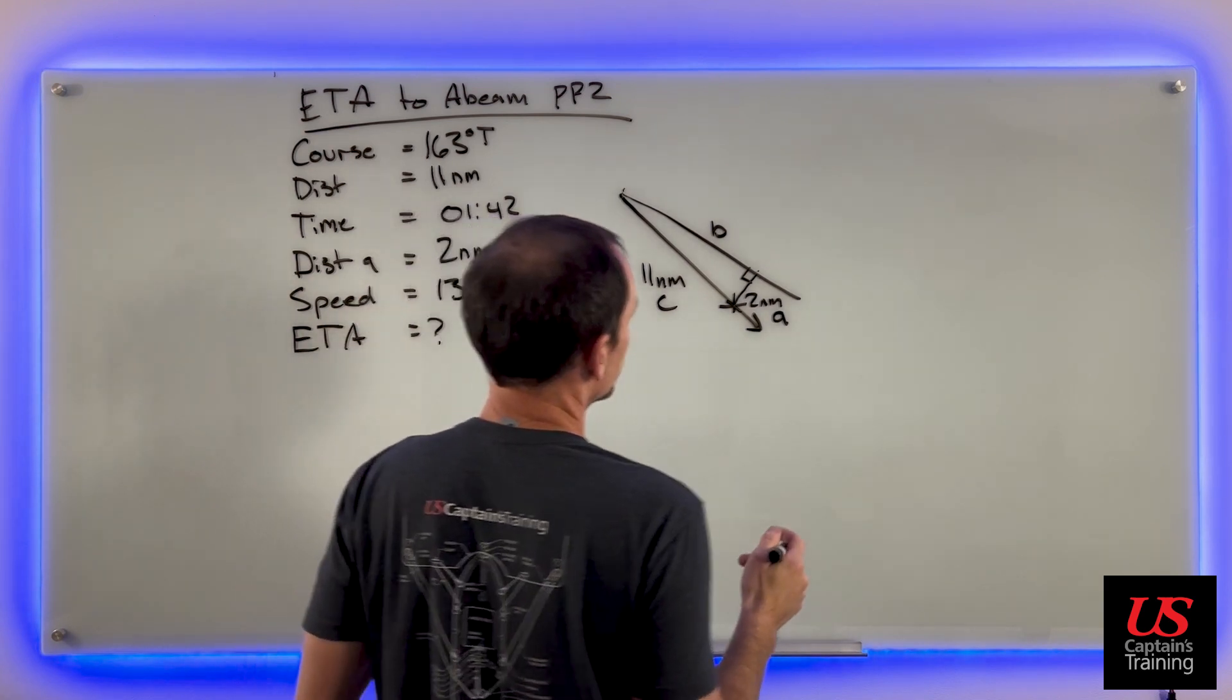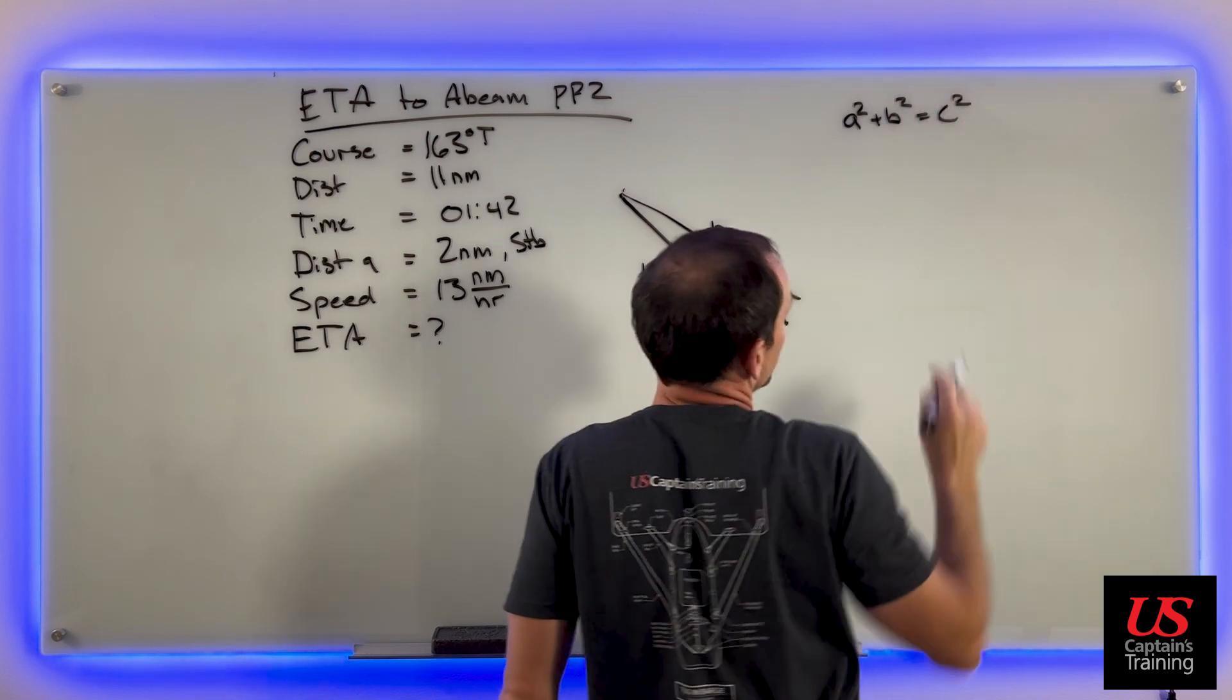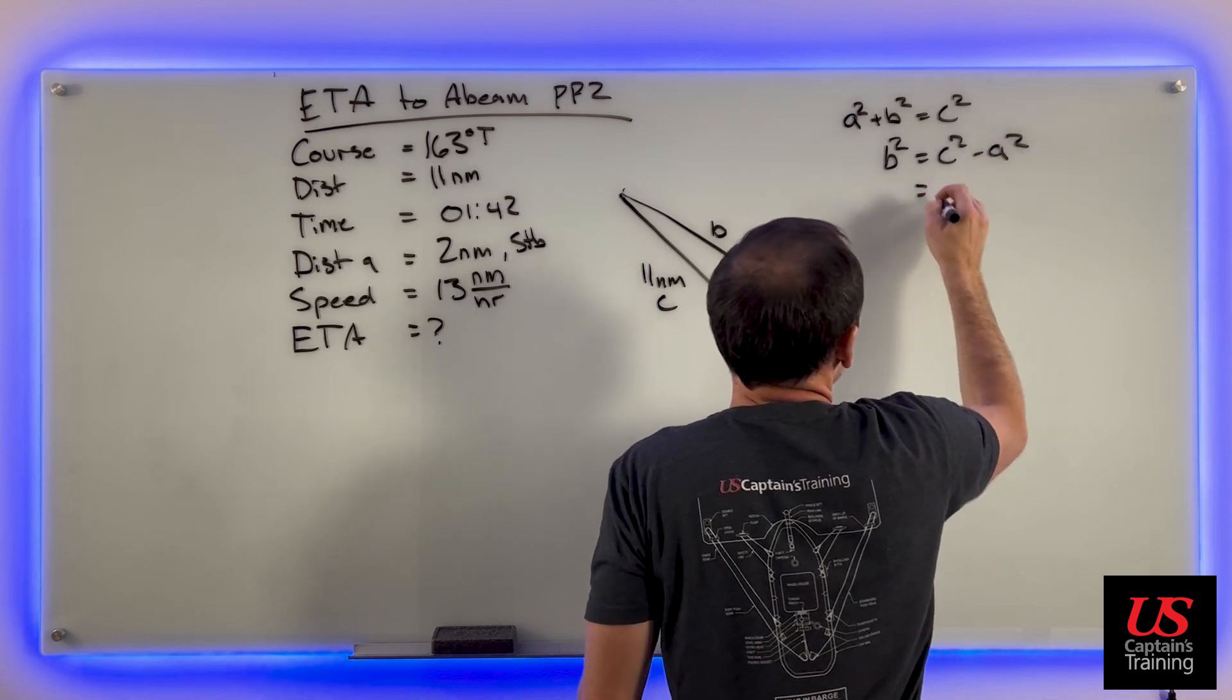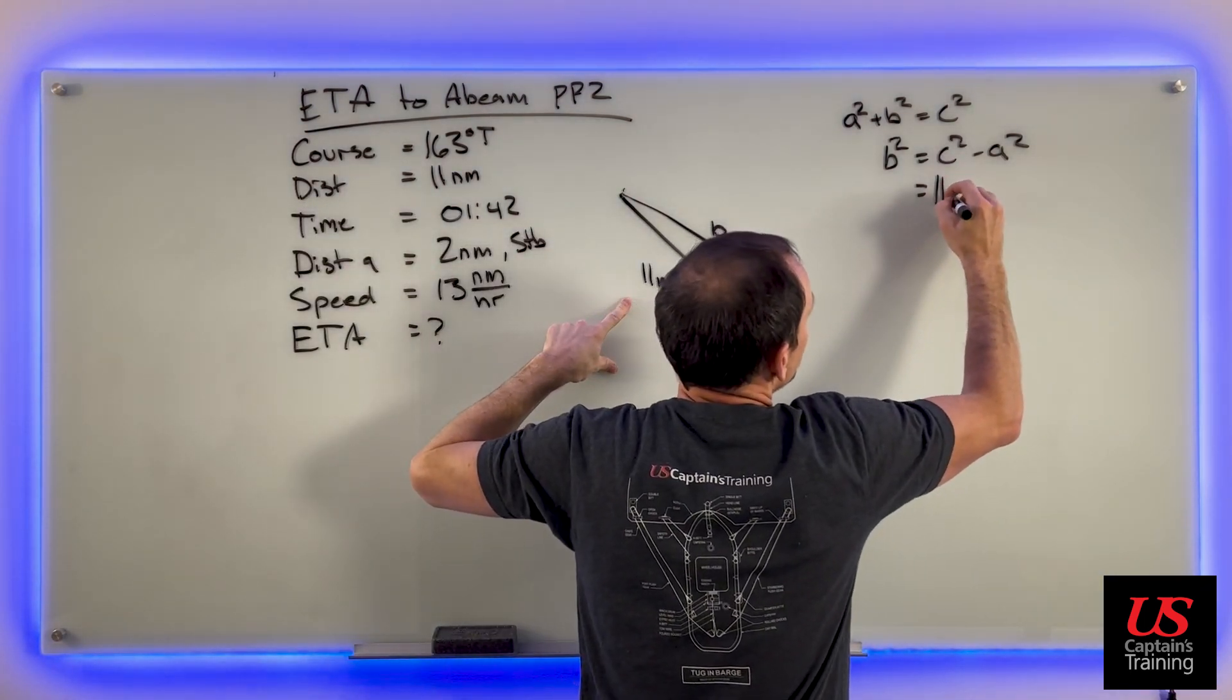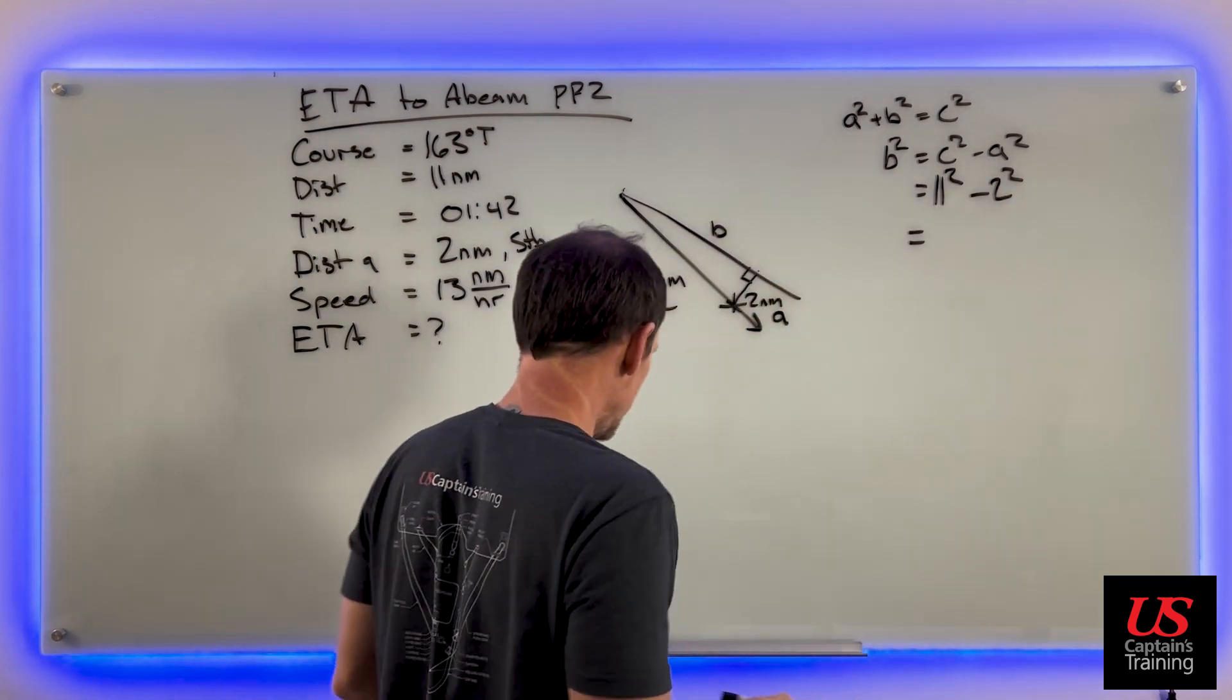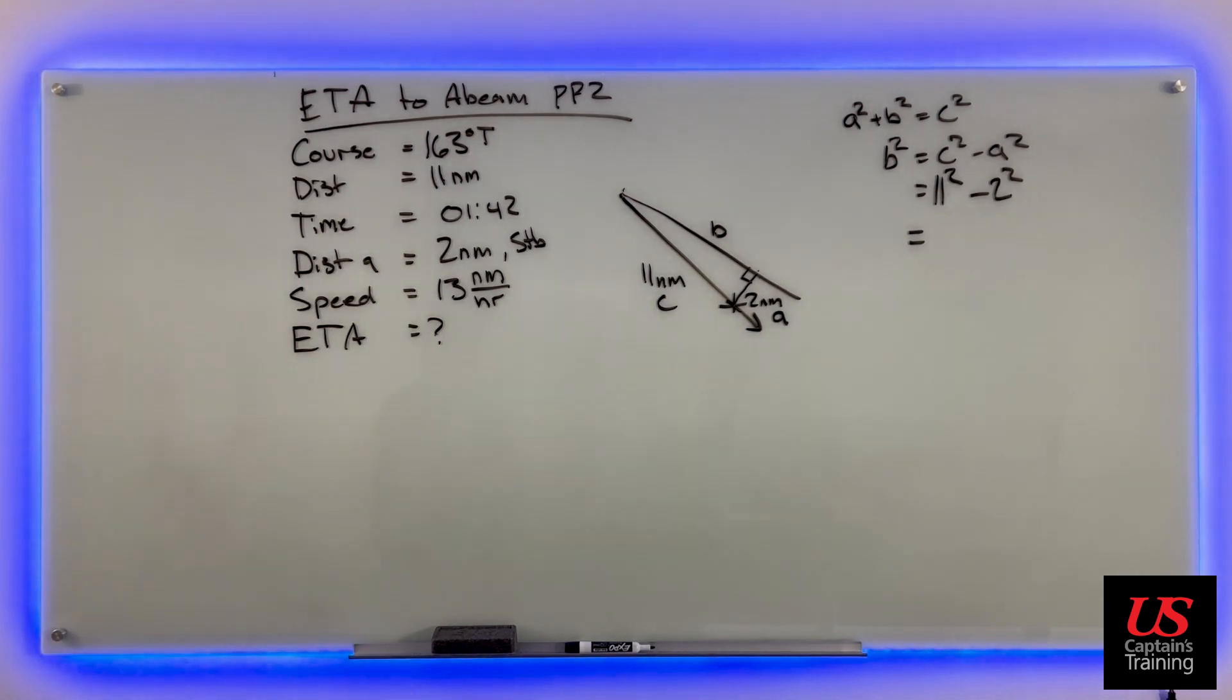Now we put this in Pythagorean theorem, which says a squared plus b squared equals c squared. We're looking for b, so we get b squared equals c squared minus a squared. Now we can plug and chug. c equals 11, 11 nautical miles. 11 squared minus a, which is 2 squared. I can do it in my head - 11 squared is 121 and 2 squared is 4. But let me punch it in the calculator.